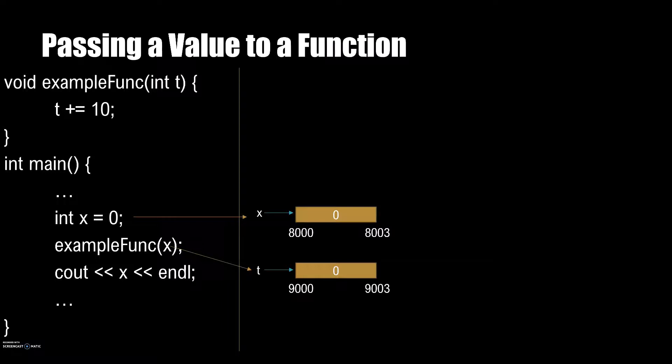In this case, int x had its value copied to another memory location, which was then passed to the function where that memory location 9000 had its value changed to 10, leaving x, which refers to memory location 8000, unchanged.